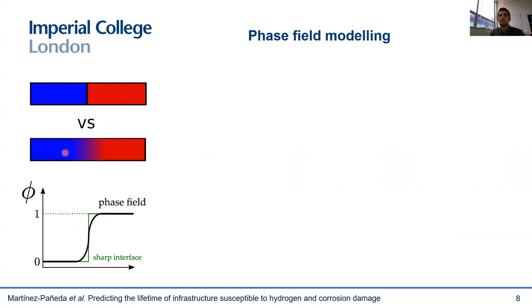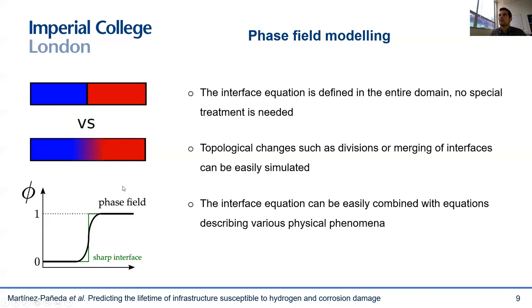In this example, we have two phases, and the phase field variable takes two distinct values in each of the phases — 0 or 1 — and then varies smoothly in between at the interface. There are multiple benefits associated with this diffuse interface idea. The interface equation is defined in the entire domain, so there's no need for special treatment of the interface. Topological changes such as divisions or merging of interfaces can easily be simulated without ad hoc criteria. And the interface equation can be easily combined with equations describing various physical phenomena, making it very well suited for multi-physics problems.